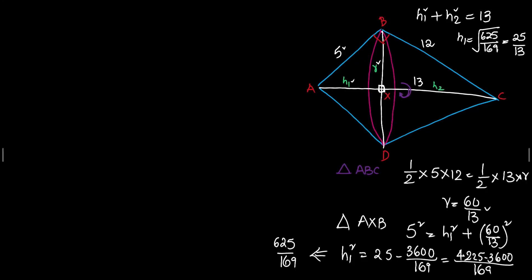If H1 is 25 by 13, we know H1 plus H2 is 13. So, H2 will be equals to 13 minus 25 by 13. Simplify that, we will get 144 divided by 13. So, we got the value of H2 here, we got the value of H1 here and we got the value of R here. So, we have everything ready. So, we can just go ahead and plug in the values to find out the CSA and the volume.